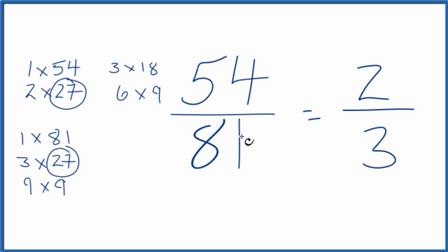So if we simplify 54 over 81, we get two over three, two thirds. And we can't reduce this any further.